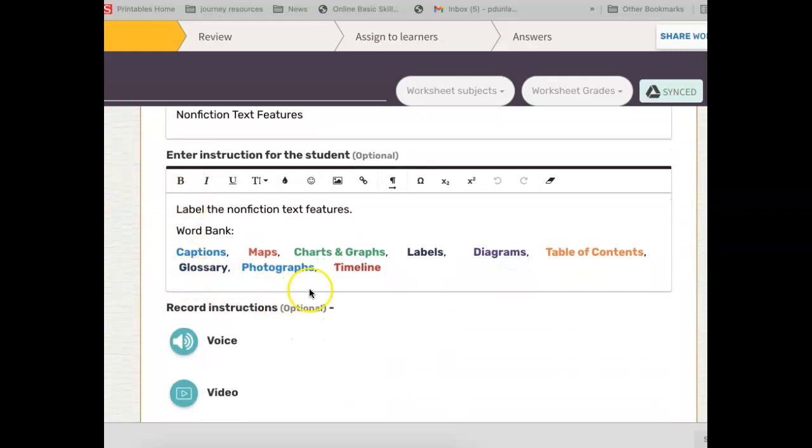When you scroll down, you're going to see nine different words that you can pick from. Okay, that's your word bank.